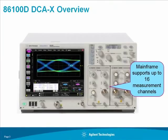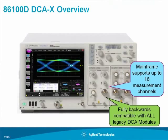The new mainframe is architected to support up to 16 measurement channels with future modules. It is also fully backwards compatible with all legacy DCA modules, ensuring that it protects the investment of those that have already invested in the DCA platform.